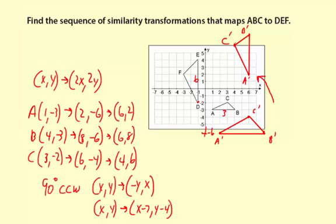Now let me try this just with C prime and see what happens. 7 to the left, 1, 2, 3, 4, 5, 6, 7 and 4 down from there. 1, 2, 3, 4. Okay, it looks good.